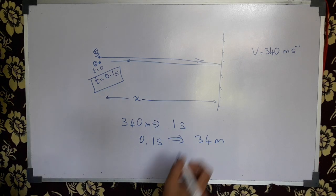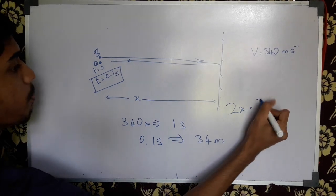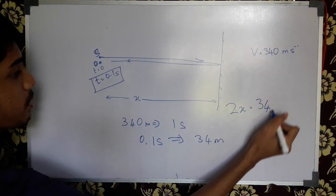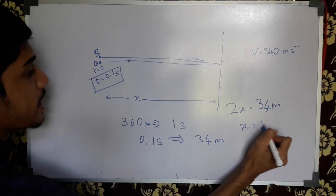2X is the same. So 2X is how long will it be. X is 0.1 meters.